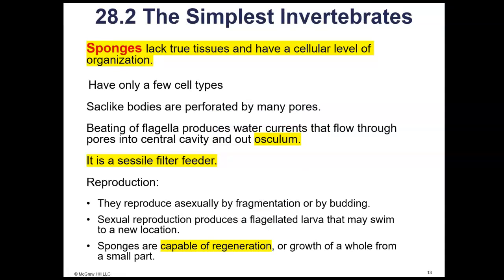That's a lot to take in — that's probably the hardest content you have to learn in chapter 28. Now we're just going to focus on the animal phyla that are classified as invertebrates, and we'll start with sponges. Sponges are the simplest invertebrates — they do not have tissues; they lack the tissue level of organization. They have an opening called an osculum and pores throughout their body. Water comes in through the pores and moves out through the osculum. Sponges feed by filter feeding and are sessile as adults; as larvae they can swim, but as adults they attach to a substrate and remain in place.